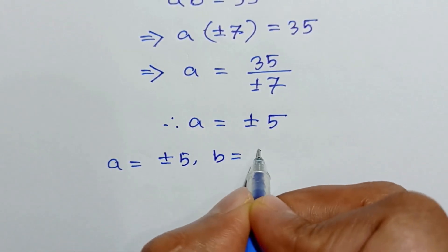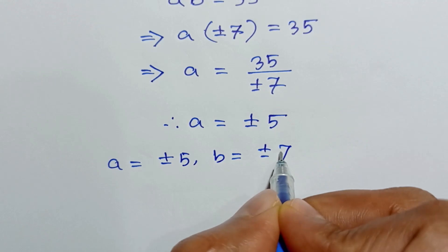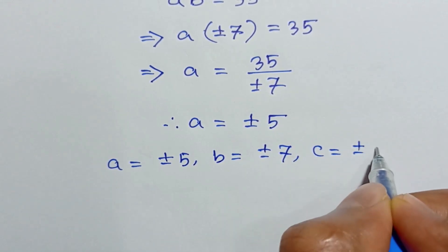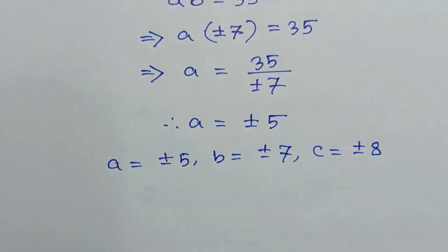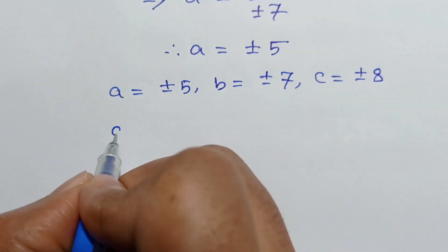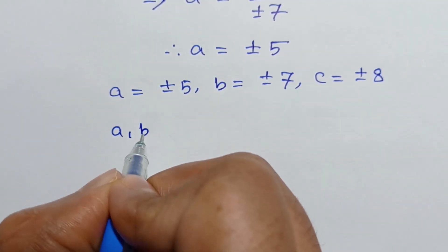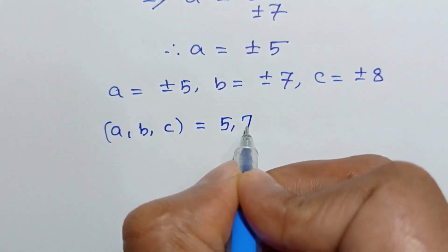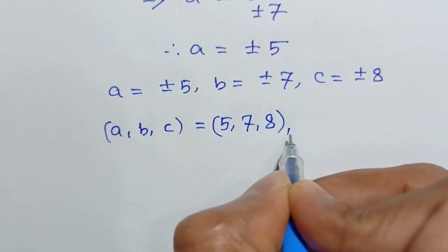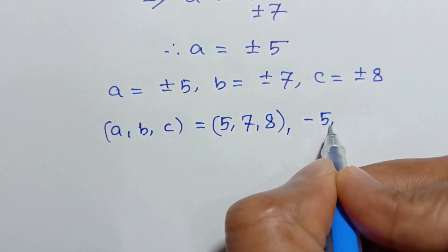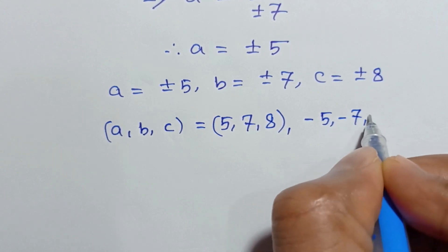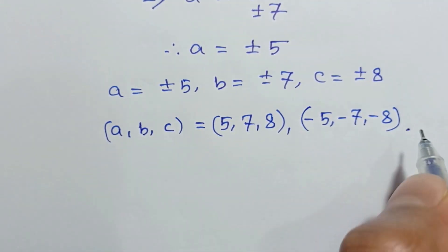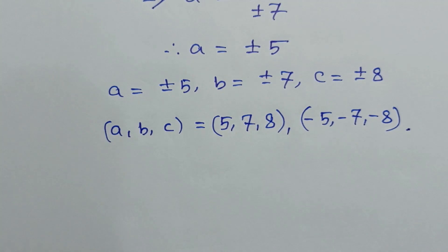So we got the two sets of solutions: a, b, c is equal to 5, 7, 8 and negative 5, negative 7, negative 8. This is the solution of this equation. If you like this video please subscribe to my channel. Thanks for watching.